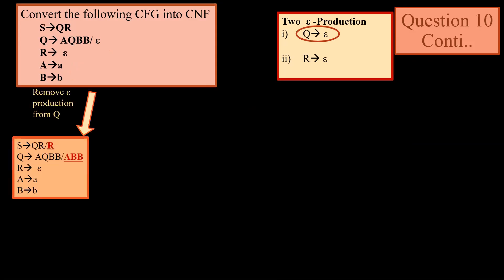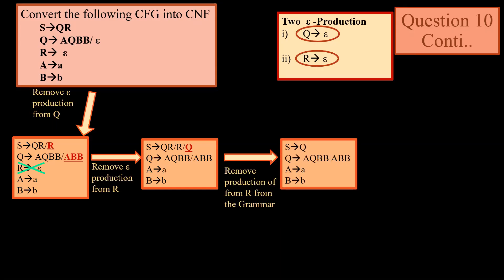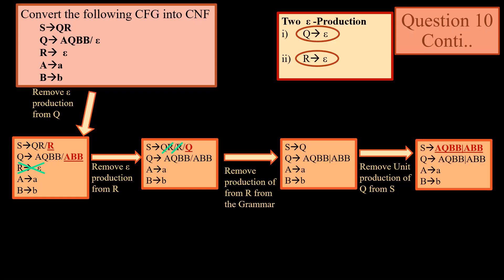The final grammar for conversion to Chomsky Normal Form is given. Per this grammar we have two epsilon productions: Q → ε and R → ε. First we remove Q → ε, and we get one production S → R and another new production Q → ABB; epsilon has been removed from Q. Now we move to the second epsilon production removal: R → ε. We remove R and the output is S → Q. Since there is no production of R leading to any terminal or non-terminal, we remove all productions of R from the grammar. The output has a unit production S → Q.